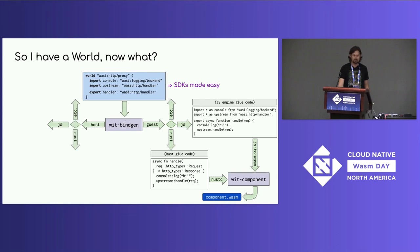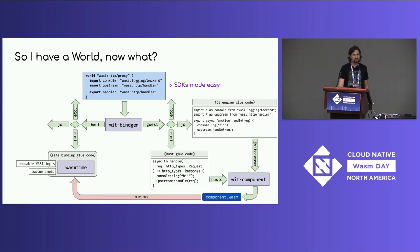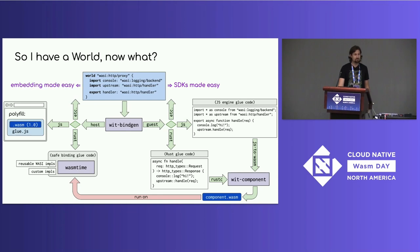Going the host direction, I'll again have the same language choice. Going the Rust direction, it wraps Wasmtime with glue code that gives me safe high-level traits to implement for imports and call for exports, and I can plug in reusable implementations of common WASM interfaces or custom implementations. This wrapped Wasmtime will run components compiled from the same world or any compatible world. In theory the host JS direction shouldn't be needed — components will be natively implemented by JS runtimes just like core WASM is today — but until then it provides a polyfill to run components in today's JS engines and browsers as WASM 1.0 and JS glue code. From a host perspective, WIT gives us embedding made easy.